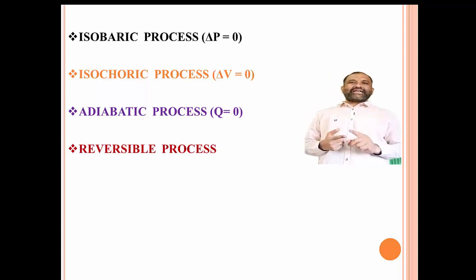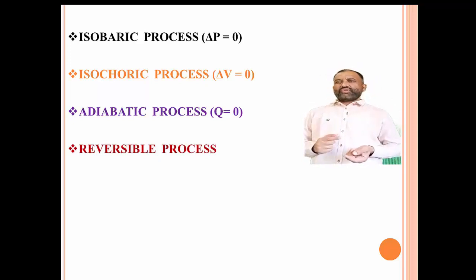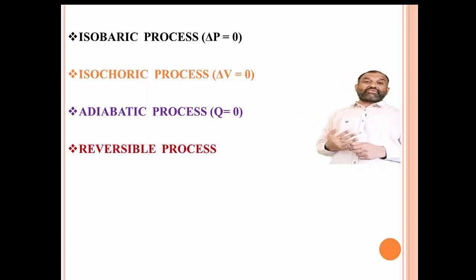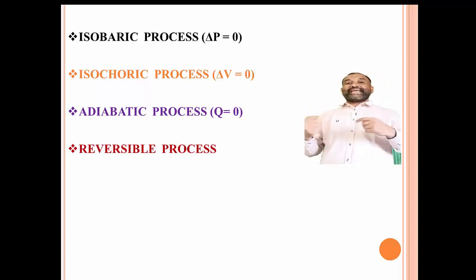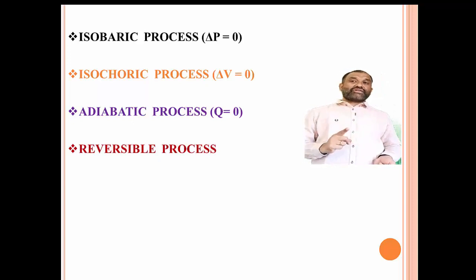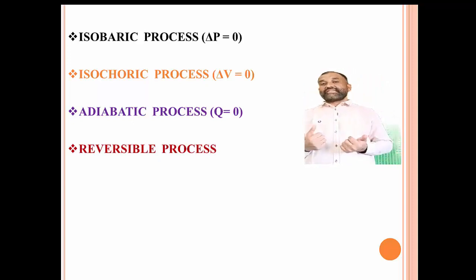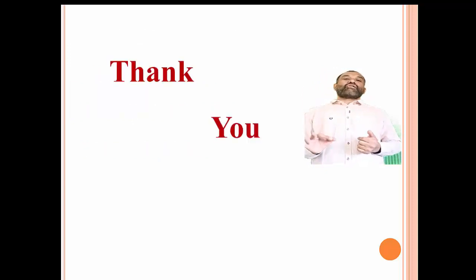Similarly, the internal energy change is also not equal to zero. What is the major difference between adiabatic and isothermal processes? In an isothermal process, heat can be exchanged and temperature remains constant, while in an adiabatic process heat cannot be exchanged and temperature does not remain constant.